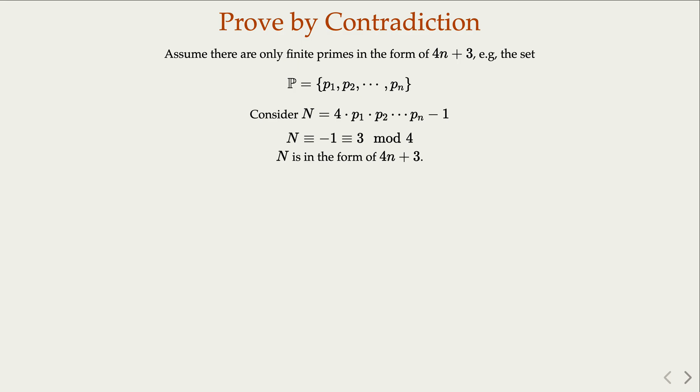Now, of course, you notice that N does not belong to P, right? Because the way N is constructed is larger than all of the prime numbers in the set. Since P contains all the primes in that form, N is in that form, so of course N is not a prime. So N must be a composite number based on our assumption.